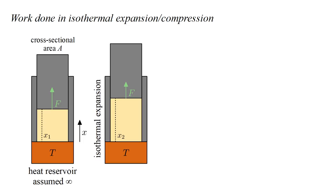With that in mind, let's consider the work done in isothermal expansion or compression. The gas volume equals the piston cross-sectional area A times the gas height X. The force on the piston is the gas pressure P times the area A. From the ideal gas law, the pressure is the number of gas atoms N times Boltzmann's constant K times the temperature T divided by the volume. The force is then NKT over X.